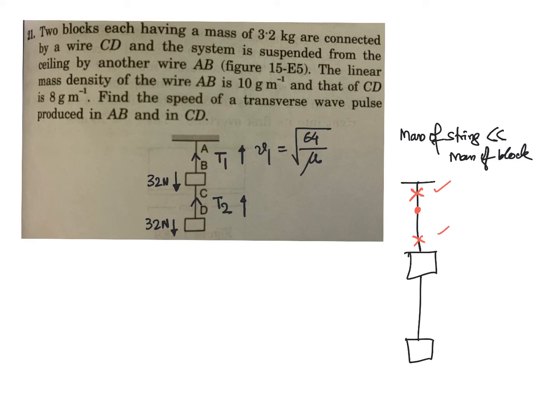And in the lower rope, tension T2 is equal to how much? 32. And that's... okay, that's mu1 for the upper rope, the lower rope is mu2.